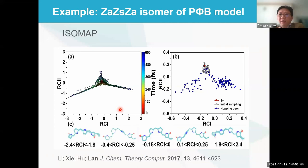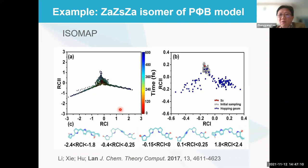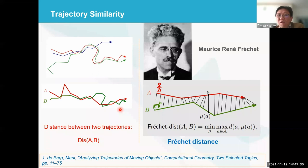I realized that dimensionality reduction might not always work well because in many situations we may have several different reaction channels — for example, two isomerization channels where trajectories go forward or backward. Simply applying dimensionality reduction to construct active coordinates might not work, because for different channels we need different active coordinates. To solve this problem, I started thinking about a different approach: monitoring trajectory similarity. This means we need to find a way to define the distance between two different trajectories.